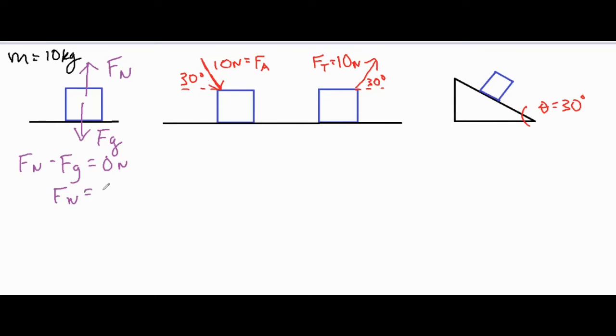So we can go ahead and say that the normal force is equal to the force of gravity. Therefore the normal force is equal to mass of 10 kilograms times little g 9.8, and the normal force then would be equal to 98 newtons.